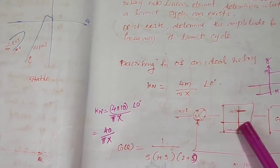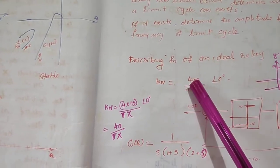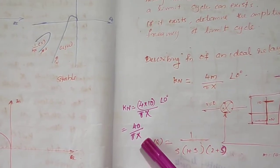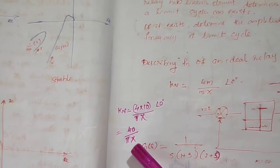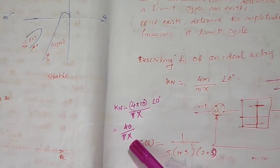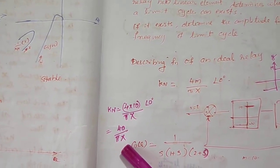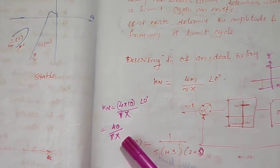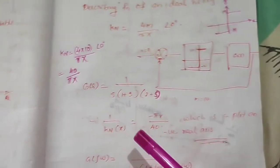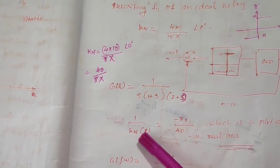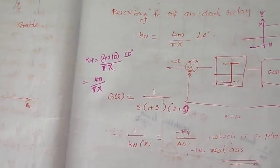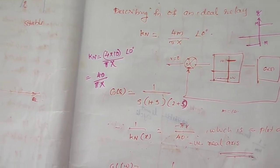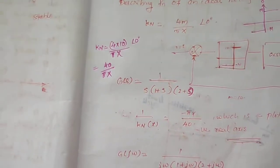Here the switching values are +10 and −10, so substituting M = 10, the describing function KN(x) = 40 divided by πX. The next step is to find minus 1 by KN(x): take the reciprocal and add a minus sign, giving minus πX divided by 40, where X is the input amplitude.